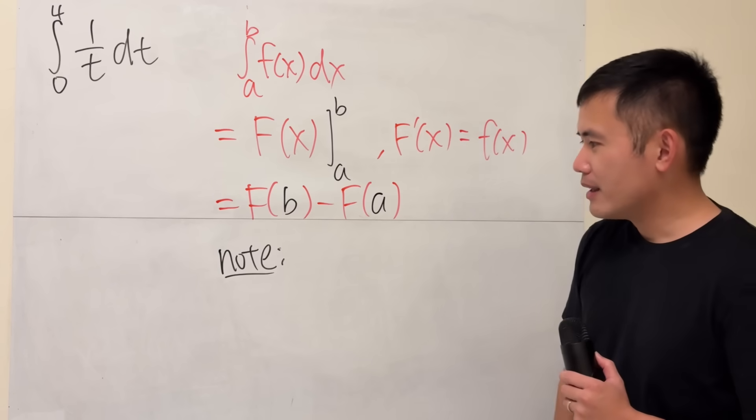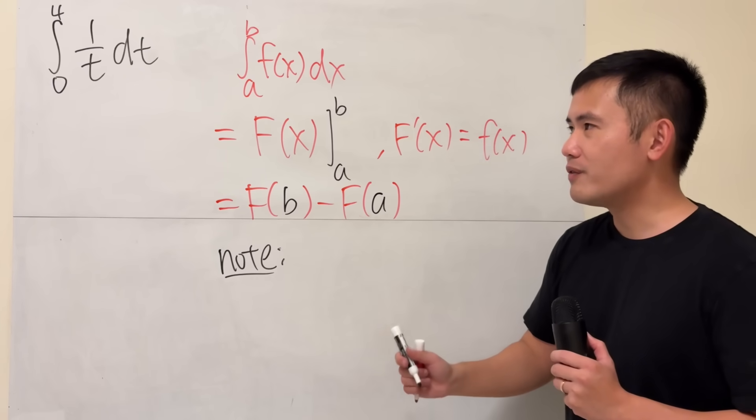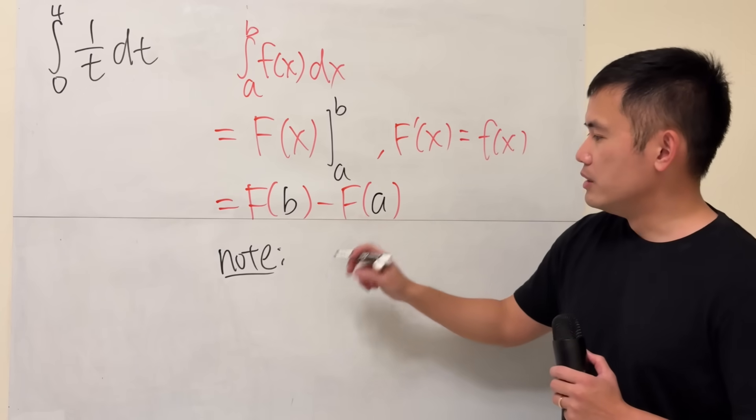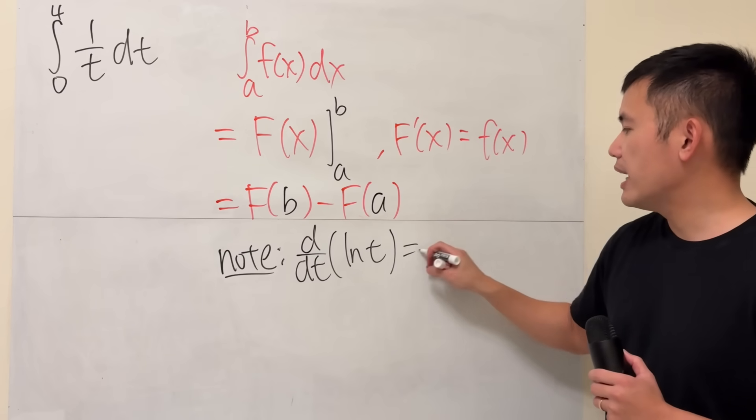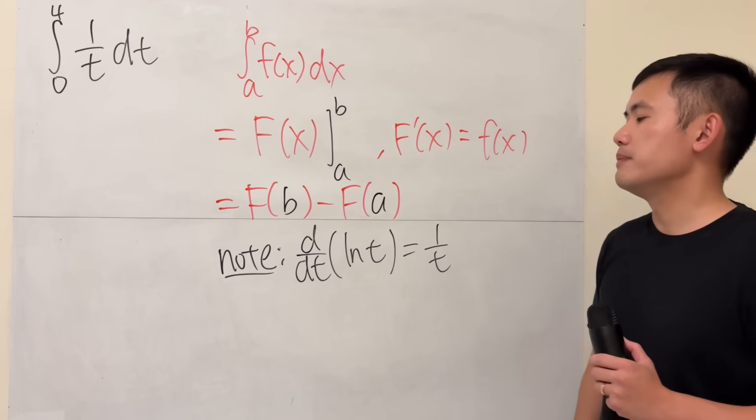So you have to think about what derivative function will give us 1 over t. Note that if we differentiate ln t, we get 1 over t.